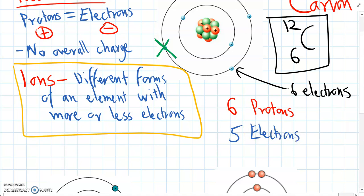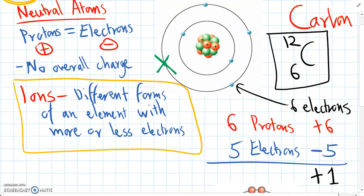So overall, the six protons are giving us a positive six charge, and the five electrons in total add up to a negative five charge. So just like in maths, if we have positive six and we're adding it to negative five, overall we have positive one. So suddenly this carbon atom has a positive charge and it's become an ion.